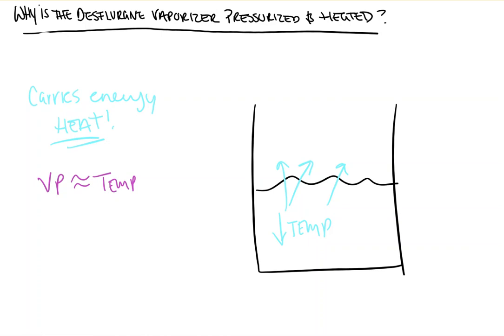As the liquid cools, less molecules would be available out here for the variable bypass portion, which, you know, we'll talk about in another video. Less molecules are going to be available to be picked up and brought into the patient because less are being liberated from the liquid to the gas because it's too cold for them to be liberated, and they don't move fast enough to escape the liquid form.